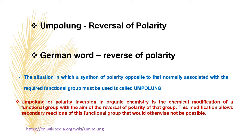Generally, the meaning of Umpolung in German is reverse of polarity. The definition: the situation in which a synthon of polarity opposite to that normally associated with the required functional group must be used is called Umpolung.